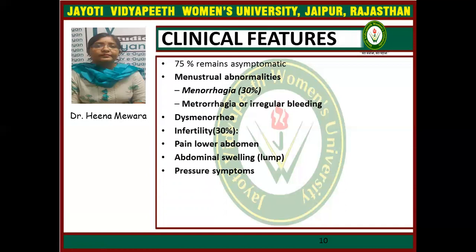Other features include dysmenorrhea and infertility, which is found in 30% of cases. Infertility may be due to uterine and tubal factors — uterine cavity distortion makes sperm ascent difficult, or defective implantation in the endometrium due to congestion, or cornual block caused by the fibroid. Additional symptoms include pain in the lower abdomen, abdominal swelling, and pressure symptoms like hydro-ureter, urinary tract infection, pyelitis, and hydronephrotic changes.